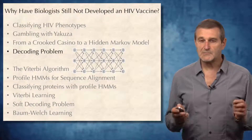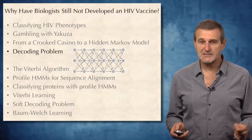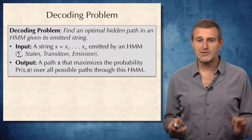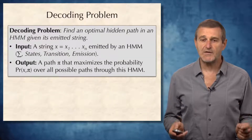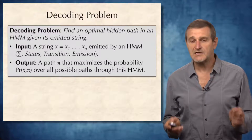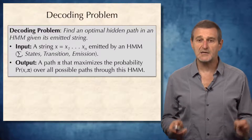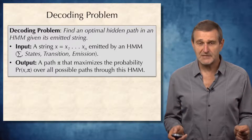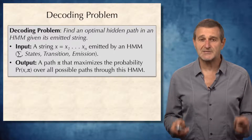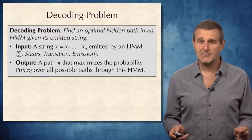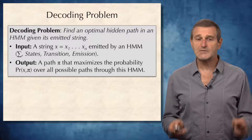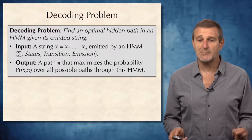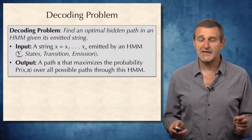We are now ready to find the most likely hidden path in an HMM, and it corresponds to the following decoding problem that asks us to find the optimal hidden path. The input is an emitted string and an HMM defined by four objects: alphabet, the set of states, the matrix of transition probabilities, and the matrix of emission probabilities. The output is a hidden path pi.